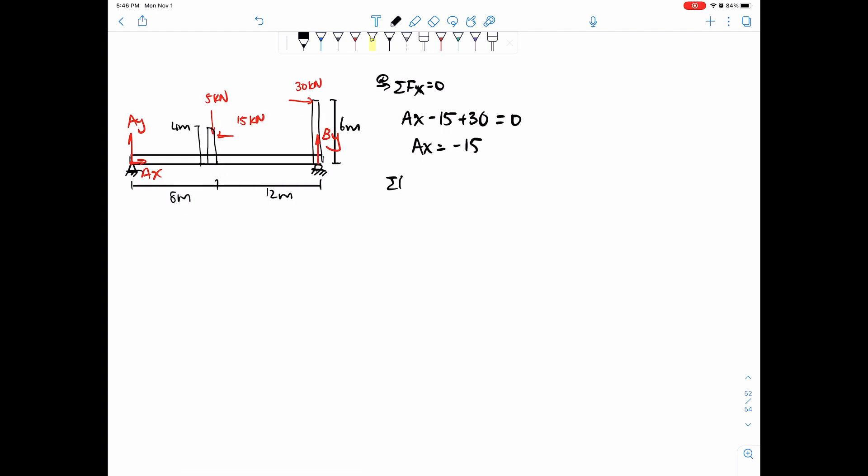Next we do sum of forces in the y direction and set that equal to zero, so we have Ay plus By minus 5, and that's the only vertical force. That's equal to zero, so we have Ay plus By equals 5.